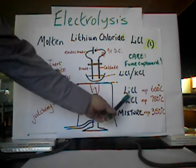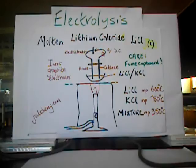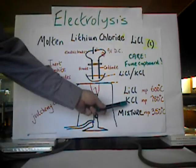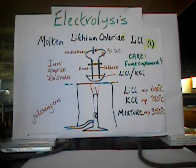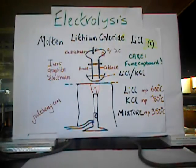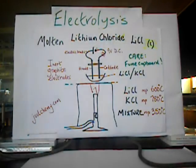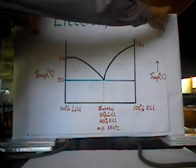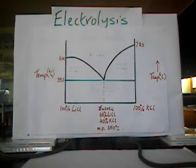There is a problem with melting lithium chloride. You can see it has a relatively high melting point of just over 600 degrees C, and it would be difficult to melt that with a Bunsen burner. However, if we mix it with potassium chloride, we end up with a mixture that melts at a much lower temperature. This comes into a branch of chemistry called phase equilibria, sometimes studied on the A-level syllabus, but this is something you do not need to know the details of.